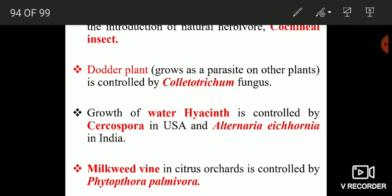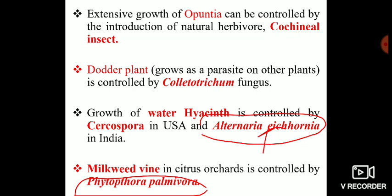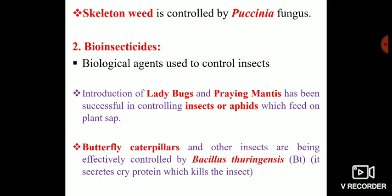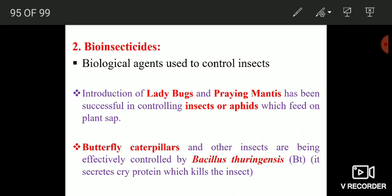The third example is water hyacinth, an aquatic plant that can be effectively controlled by Cercospora — in the USA it has been controlled by Cercospora fungus, and in India by Alternaria alternata, also a fungus. The fourth example is milkweed vine in citrus orchards, which is controlled by Phytophthora palmivora fungus. Finally, Sikaldon weed can be effectively removed from crop fields by Puccinia, also a fungus.